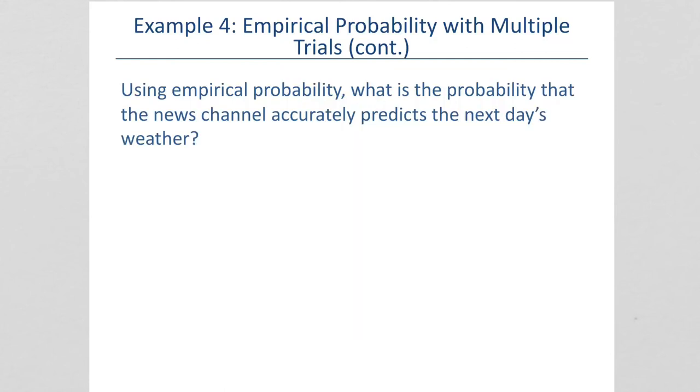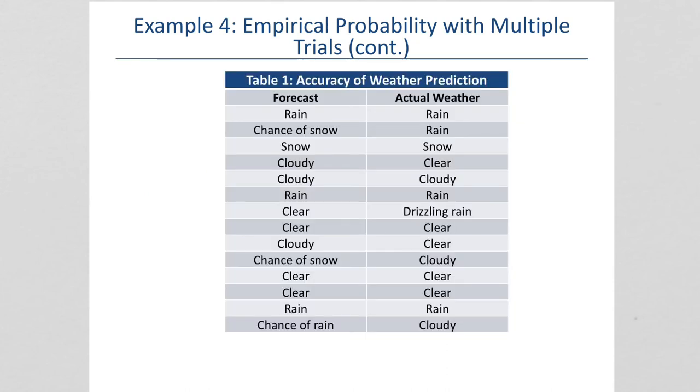Using empirical probability, what is the probability that the news channel accurately predicts the next day weather? So, we want to – the probability of a correct prediction would be the number of correct predictions out of the number of days recorded. So, let's see. How many days did she record?